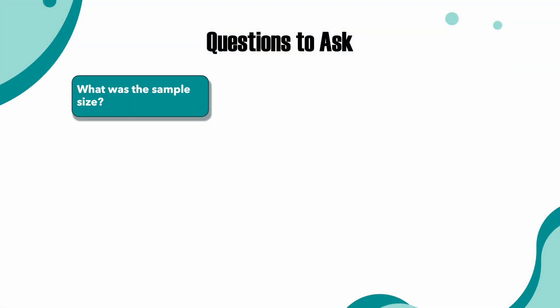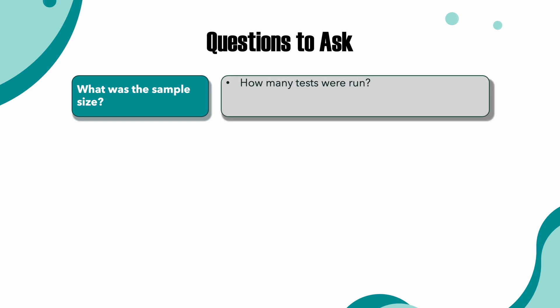Question one: what was the sample size? The sample size is how many individual tests were run, so in medical studies this means the number of people that received the treatment. What we would call a good sample size can vary from one investigation to another, but generally before drug companies can sell a treatment to the public they need to conduct trials on hundreds or even thousands of people — and this study only had 12 participants.